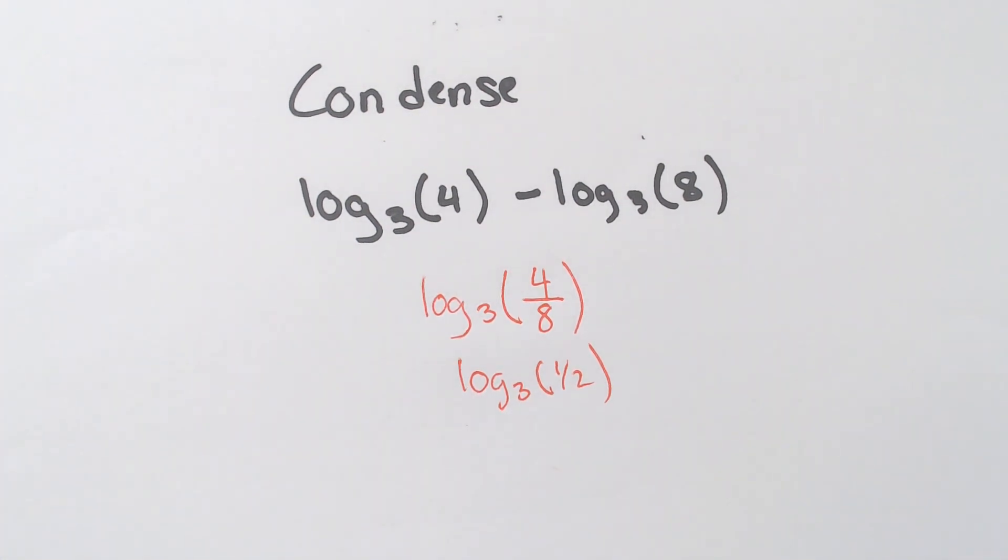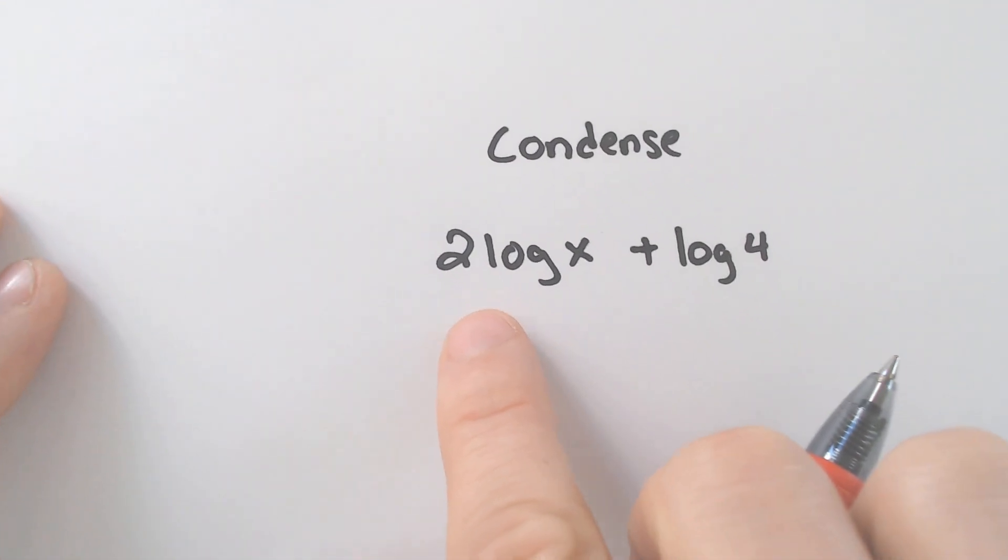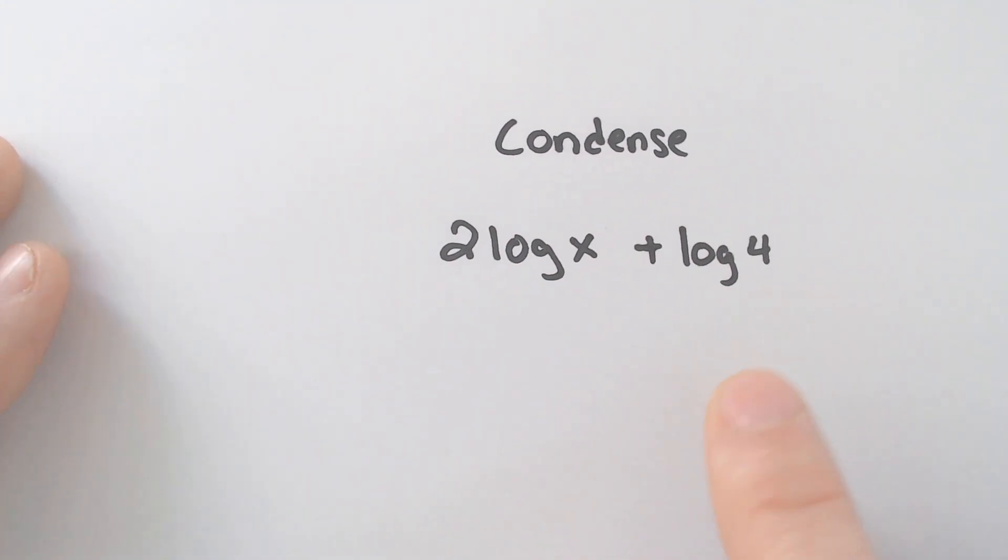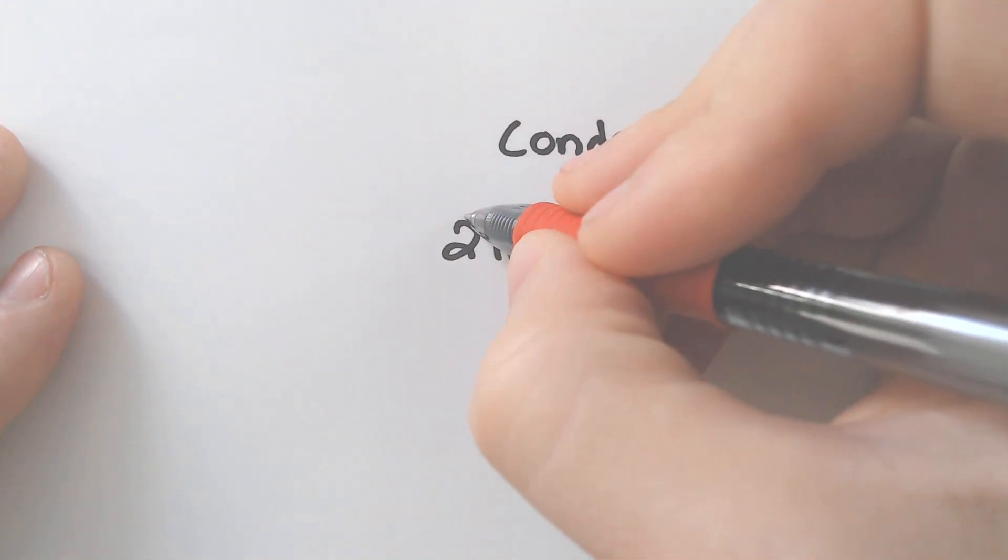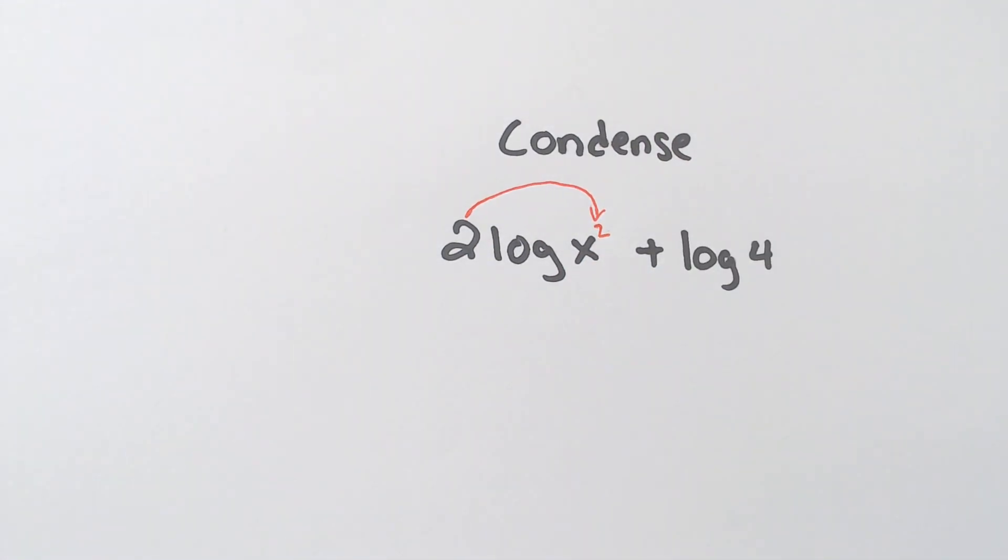So plus in between, multiply. Minus in between, divide. The only other thing you have to know is what to do if there is a number in front of a log. And that could be in front of the first log or in front of many of the logs.